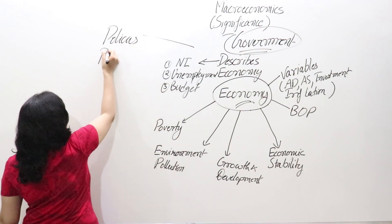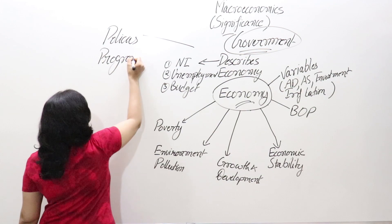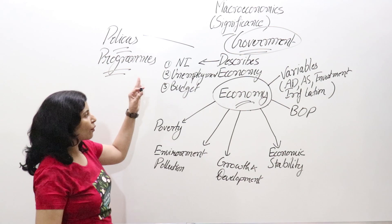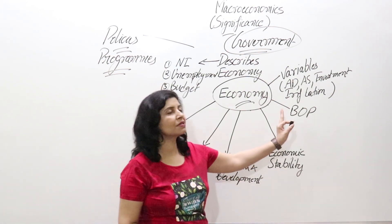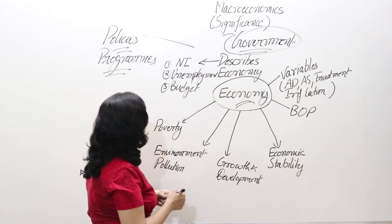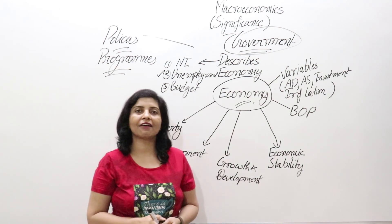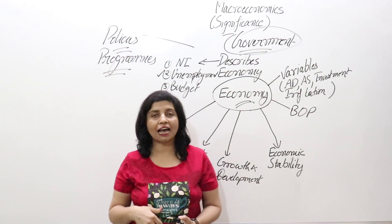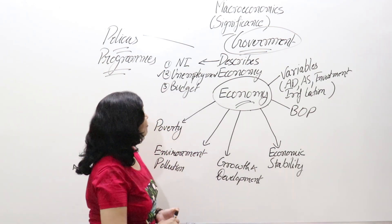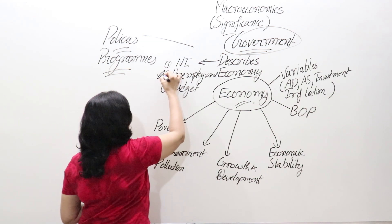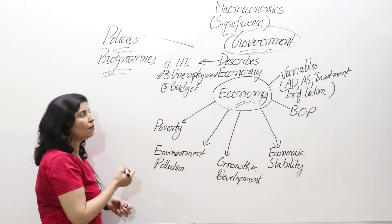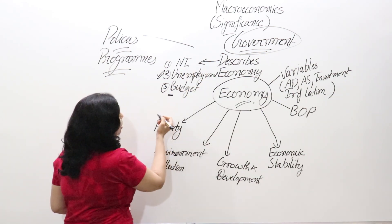We need different programs to correct all the problems in the economy. For example, there is the problem of unemployment. Various programs have been initiated by the Government of India since independence, and policies to reduce unemployment and increase national income are framed by the government.